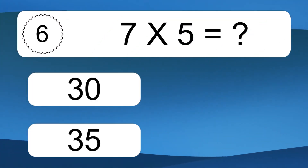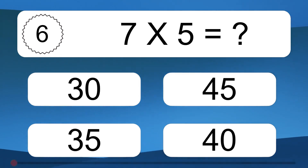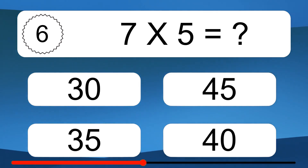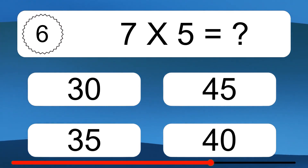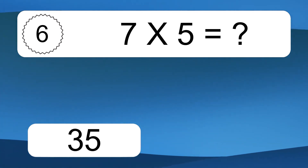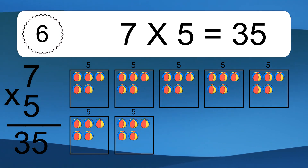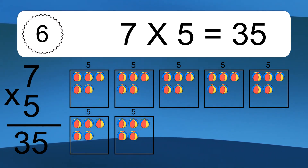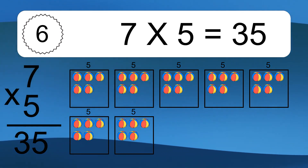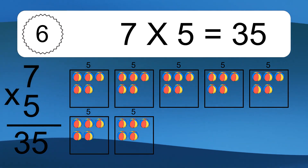7 times 5 equals what? 7 times 5. We have 7 boxes and each box has 5 colorful balls inside. If you count all the balls in all the boxes together, you will have 7 times 5 balls. This equals 35 balls.